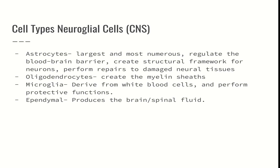Astrocytes also repair damaged neural tissue. Then we have oligodendrocytes, which create the myelin sheaths — a coating on the axons of neurons that allows the electrical impulse running down the axon to be relayed faster. Then we have microglia, which derive from white blood cells and perform a protective function; they're like immune cells specific to the brain. And then we have ependymal cells, which create the brain and spinal fluid. Your brain is actually suspended in fluid so it doesn't collapse under its own weight, and that fluid is produced through the ependymal cells.